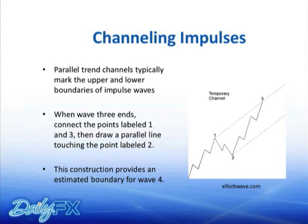Channeling is the best, most useful part of Elliott — and it's not just impulses but also corrections. Once you have three waves up and you think wave four is underway, you can draw a line from one to three, take a line parallel to that and extend it from the bottom of two. You have a temporary line, and once price gets close to that line, you look for signs of a bottom.